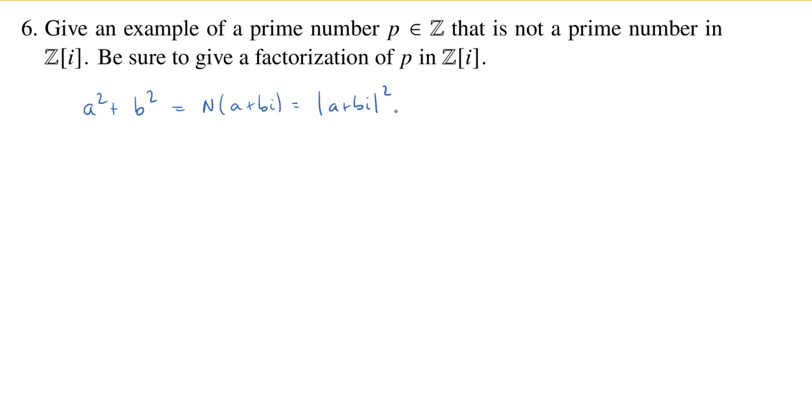And another way that you could write this down is (a + bi)(a - bi). So normally, when you're working in the integers, you can't factor a sum of squares. But over the Gaussian integers, it is possible to factor a sum of squares as a product of two Gaussian integers.